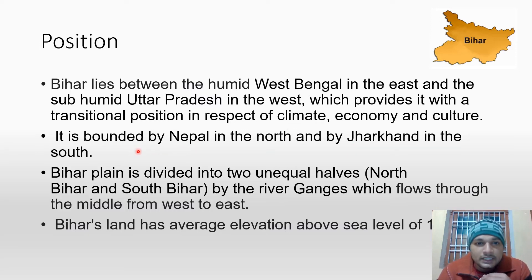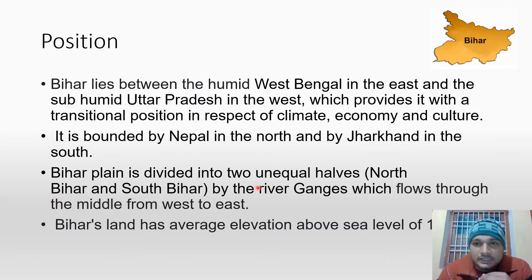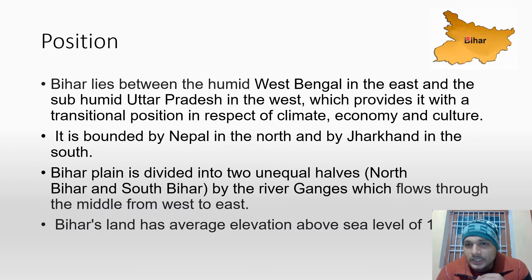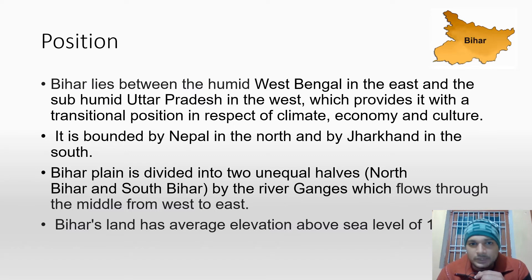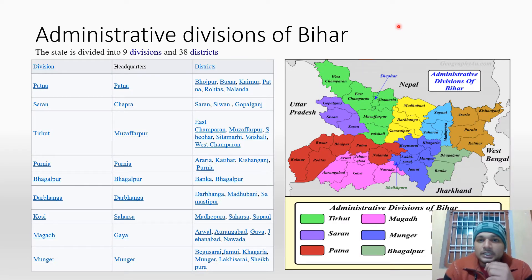Bihar is in the middle of the region, and the Ganga river is not exactly at the half, but it divides Bihar into North and South parts. The average elevation of Bihar from sea level is about 100 meters, so Bihar's entire region is mostly flat. Bihar has 38 districts and these 38 districts are grouped into 9 divisions.